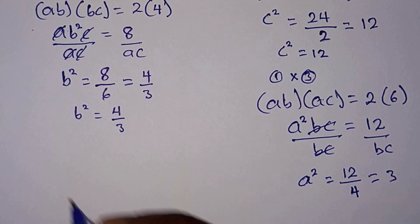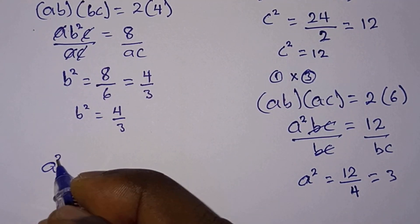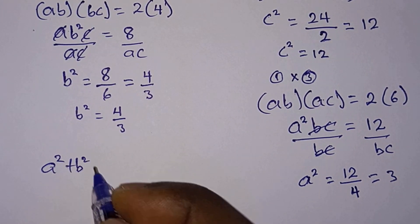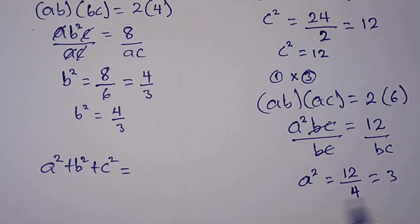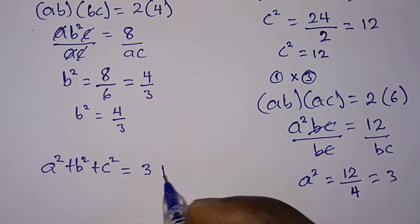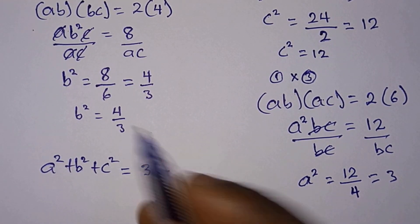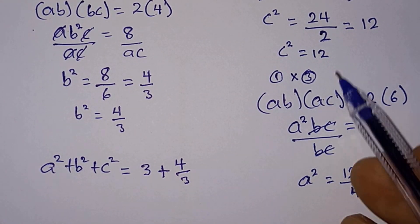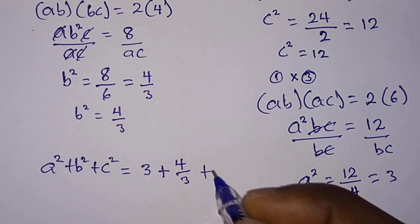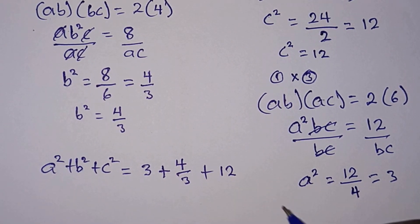From the question we have to find the value of a² + b² + c². We know that a² is 3. So we have 3 + b², which is 4/3, and c² = 12. So we have + 12 here.